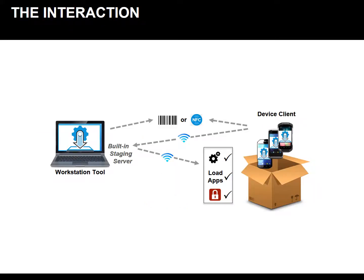Let's take a closer look at the interaction between the workstation tool and the device client. Workstation tools create profiles that then generate barcodes and NFC tags. Devices scan the barcodes and NFC tags in order to connect to the network. Once connected to the network, devices automatically connect to the built-in staging server of the workstation tool. This built-in staging server comes out of the box with the installer for the workstation tool — no additional setup or configuration is required from you.